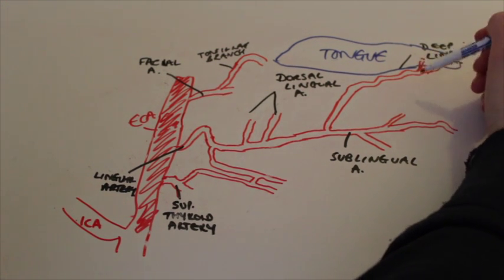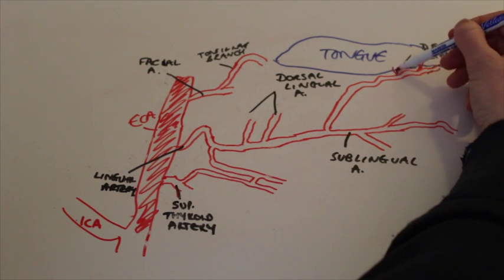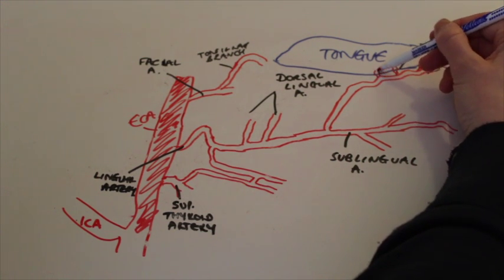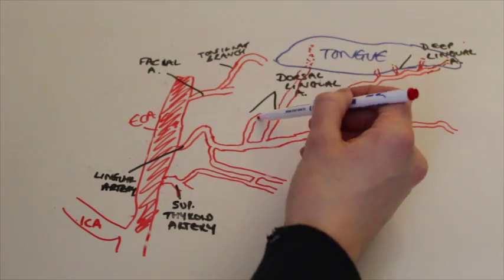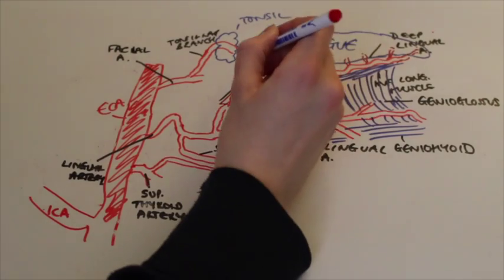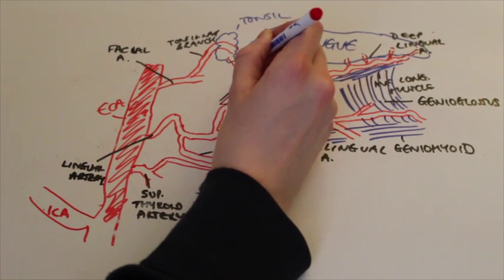The deep lingual artery has many smaller branches that comes off it which go up into the tongue. The dorsal lingual artery also extends up to the root of the tongue. The dorsal lingual artery also supplies some branches to the tonsils.